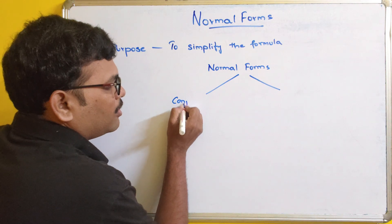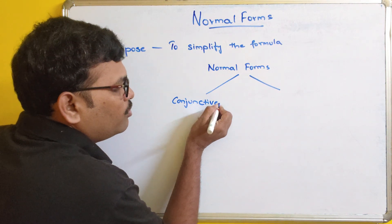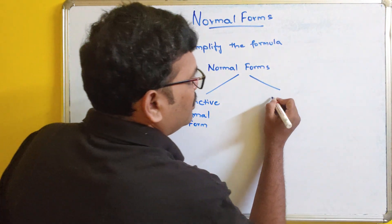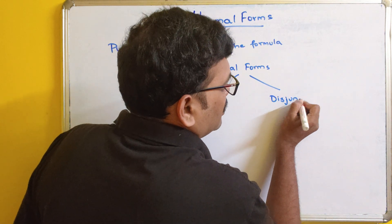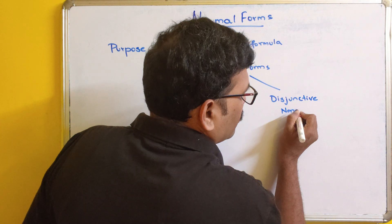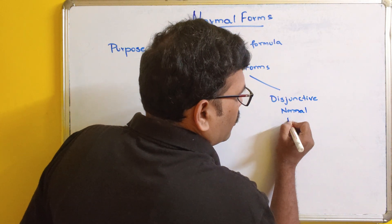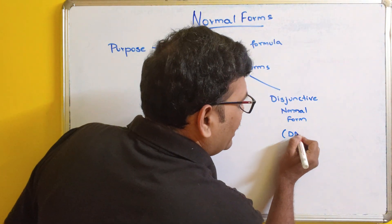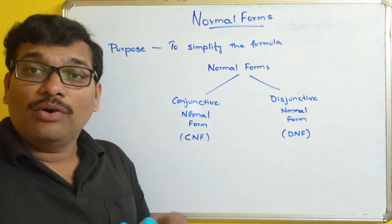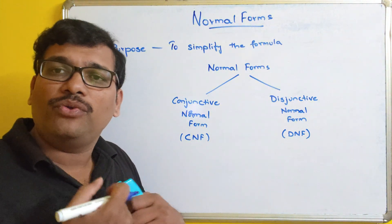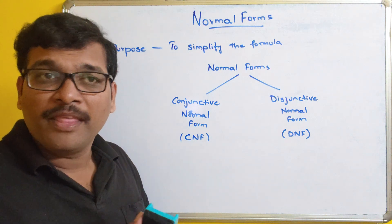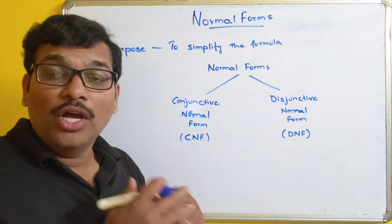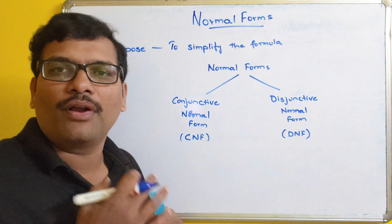One is Conjunctive Normal Form and the other one is Disjunctive Normal Form. We usually call them CNF and DNF. Once you get the formula, we have to simplify that compound formula into either CNF or DNF, which makes it easy to find out the logical equivalence and simplifies the given compound formula.